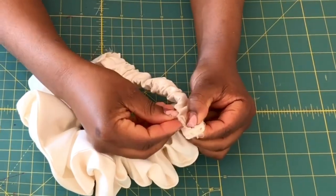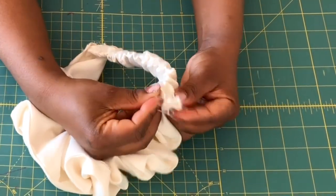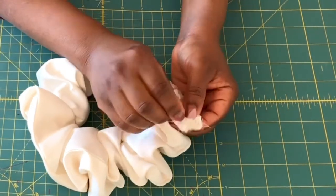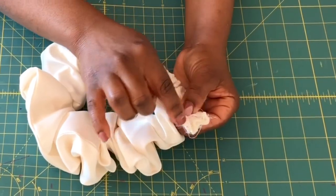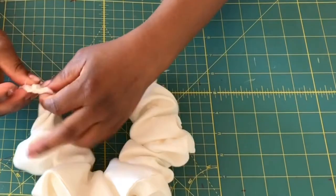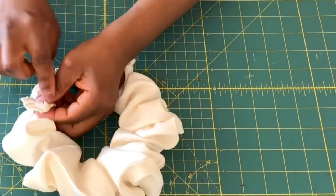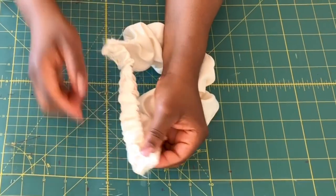After securing it, go ahead and stitch it down at half an inch on both ends of the fabric. Stitch it down right at this edge like so. This is how it should look. Now we're going to cut the excesses.